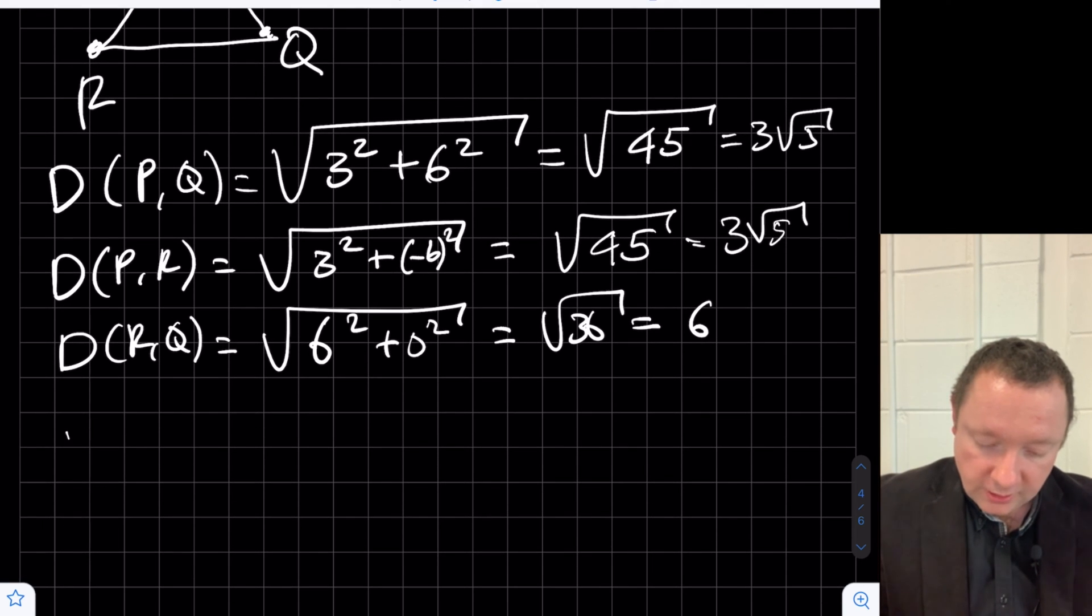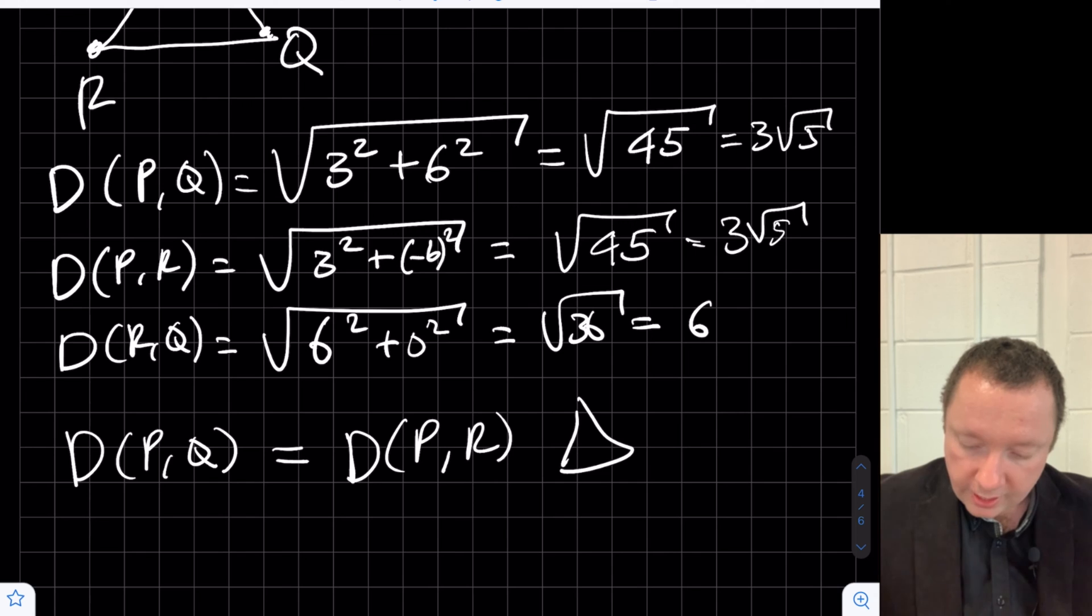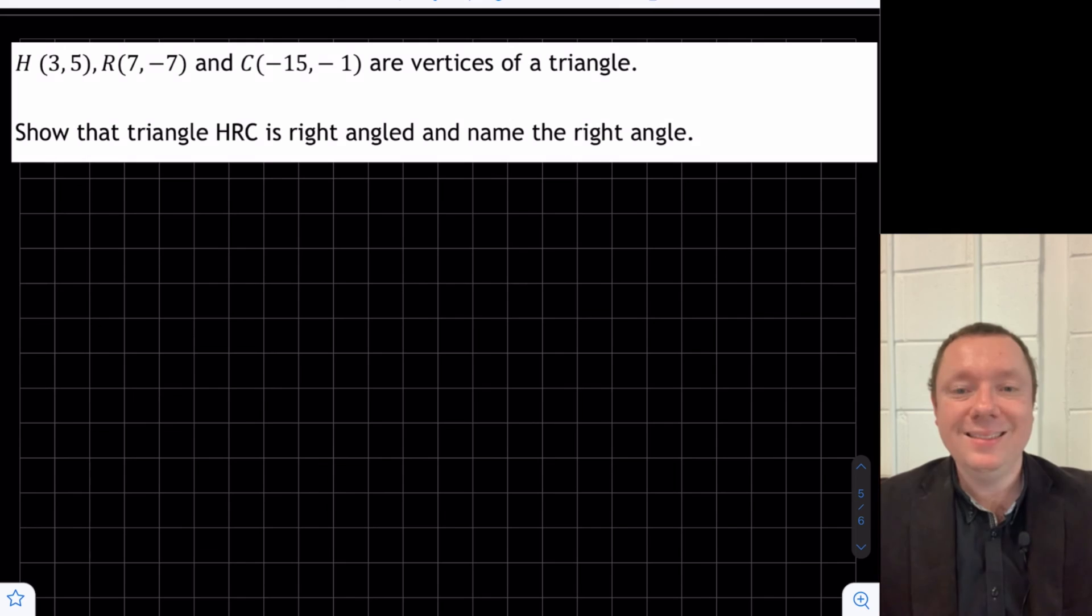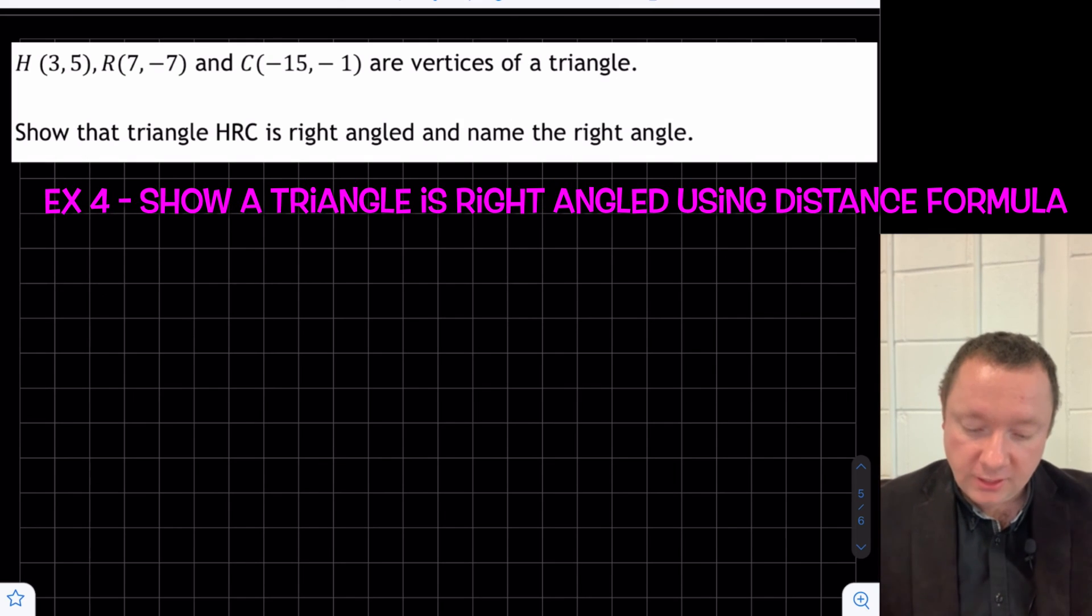But the key point is, since the distance from P to Q equals the distance from P to R, triangle PQR is isosceles.